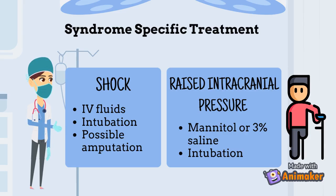Depending on the patient's state, they may also have to be intubated or be given specific treatments to address changes in the levels of molecules in their blood, such as low glucose or calcium levels. Shock can also cause poor perfusion of the skin and limbs, which in extreme cases can lead to amputation. If the individual has high intracranial pressure, which is pressure inside the brain, they should be treated with mannitol or 3% saline, which helps decrease intracranial pressure, and additionally, intubation protects their breathing.